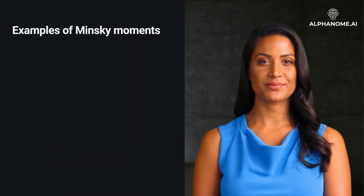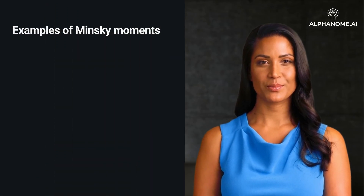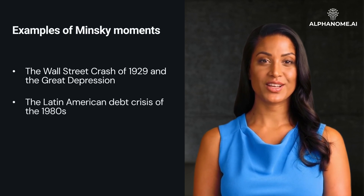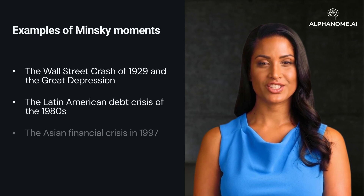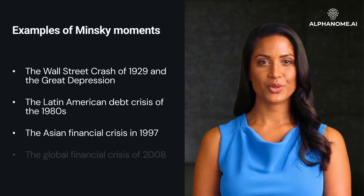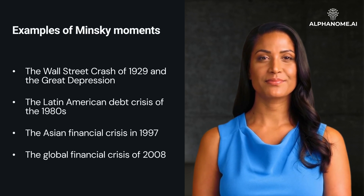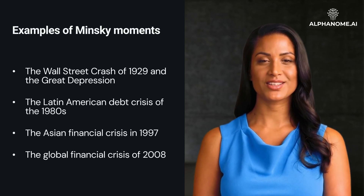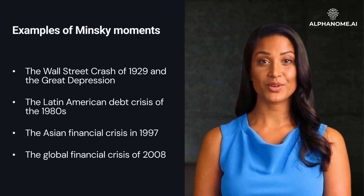Some examples of past Minsky Moments include the Wall Street Crash of 1929 and the Great Depression, the Latin American Debt Crisis of the 1980s, the Asian Financial Crisis in 1997, and the Global Financial Crisis of 2008. In each case, a period of stable growth led to increased risk-taking and excessive speculation in markets like stocks or real estate. When asset bubbles popped, it caused severe economic damage.